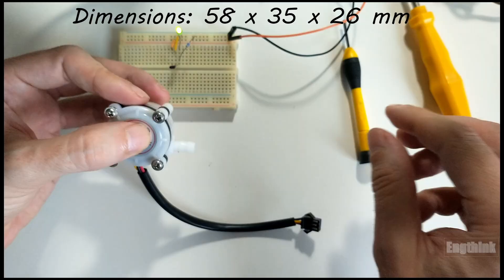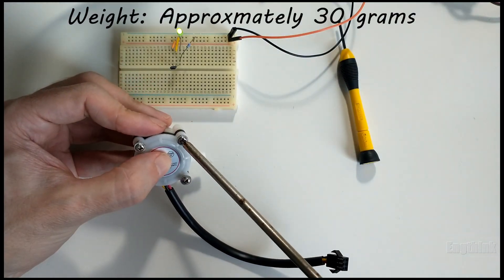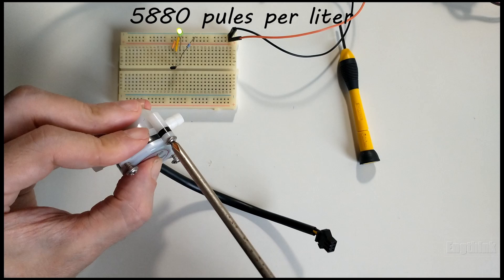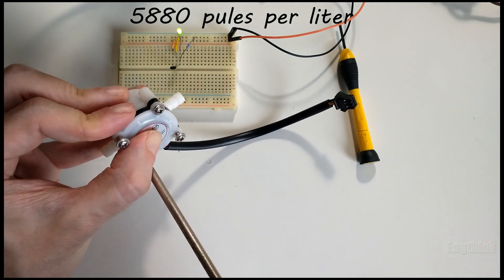Dimensions: 58 by 35 by 26 millimeters. Weight: approximately 30 grams. 5,880 pulses per liter or 0.17 milliliters per pulse.